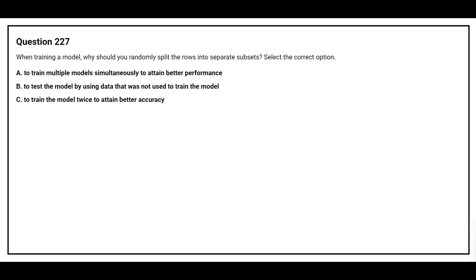Question 227: When training a model, why should you randomly split the rows into separate subsets? Option A: To train multiple models simultaneously to attain better performance. Option B: To test the model by using data that was not used to train the model. Option C: To train the model twice to attain better accuracy. The correct answer is Option B: to test the model by using data that was not used to train the model.